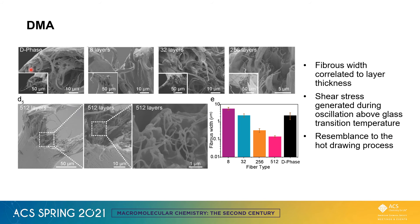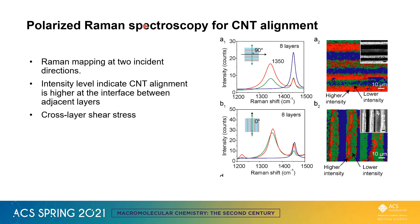Here's the fracture surface of the fibers after DMA. We observed that the fiber width was correlated with layer thickness, and we suspected that there is a shear generated during this oscillation above the glass transition temperature. We used polarized Raman to show that because of this shear, the carbon nanotubes at the interface have better alignment compared to the carbon nanotubes inside each layer.